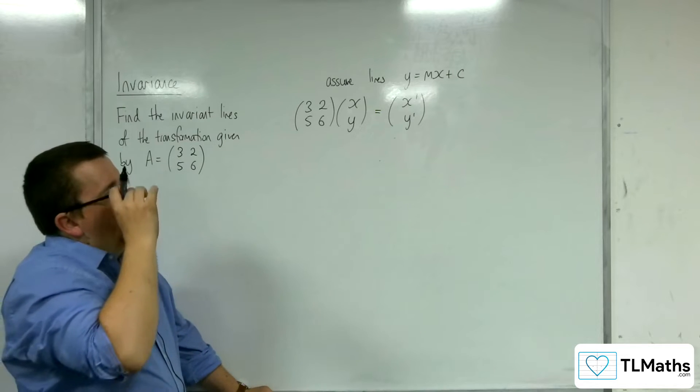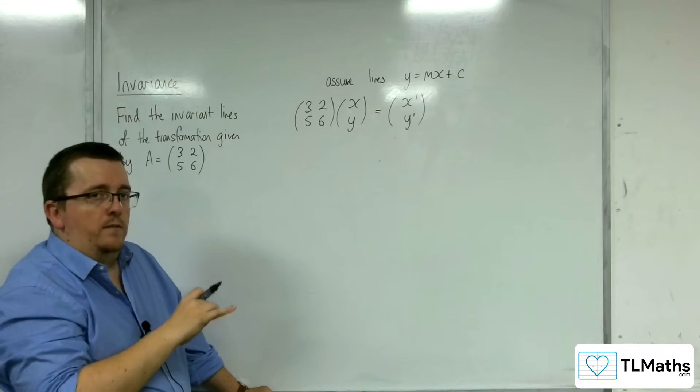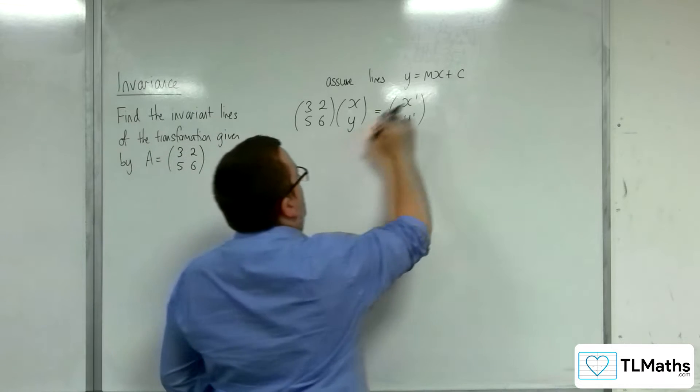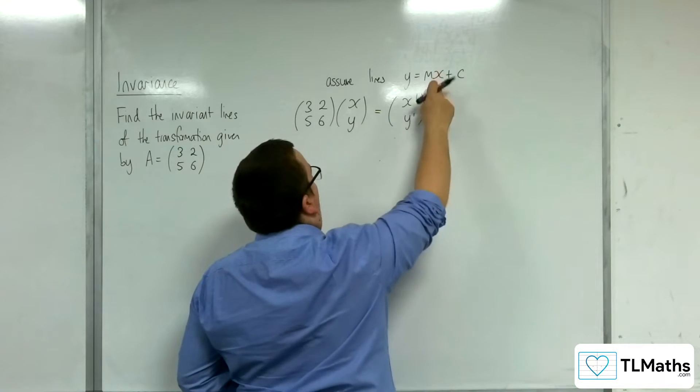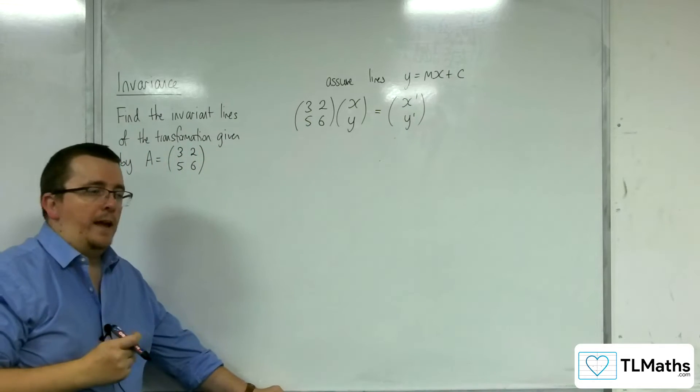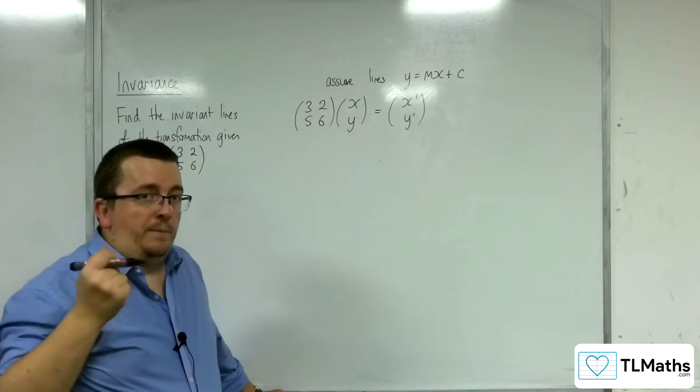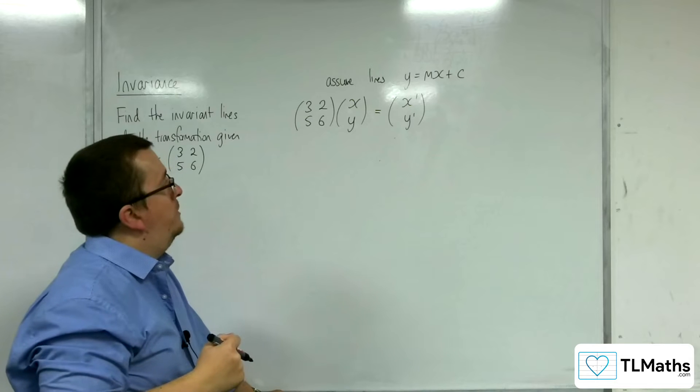Now the x, y are on this line. And the x prime, y prime are also on that line. So that's something that you need to make sure you're clear on.